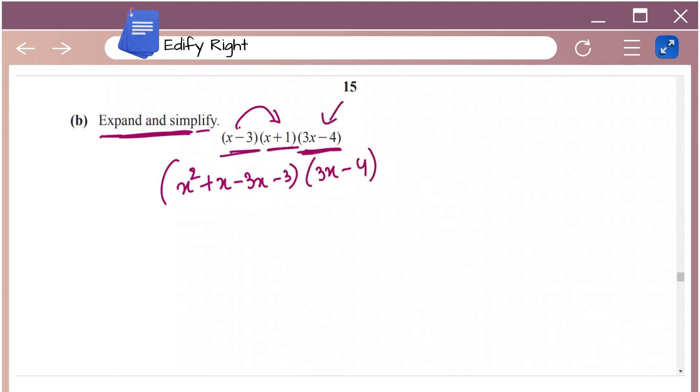Then now in the next step, expand 3x minus 4, multiply 3x minus 4 with each of the terms in the first bracket. So that will give you 3x cube plus 3x square minus 9x square minus 9x minus 4x square minus 4x plus 12x plus 12. And when you take all the common terms together, you can simplify this expression as 3x cube minus 10x square minus x plus 12.